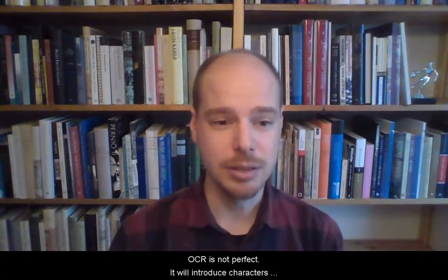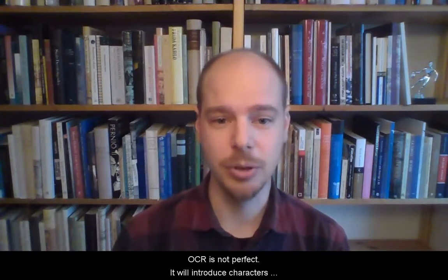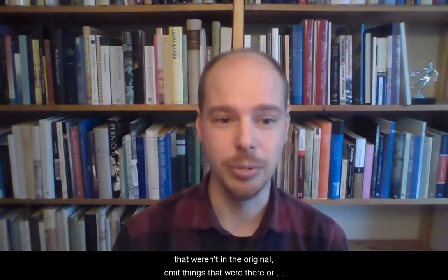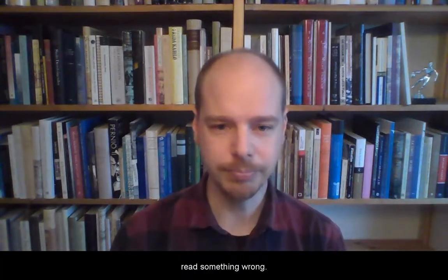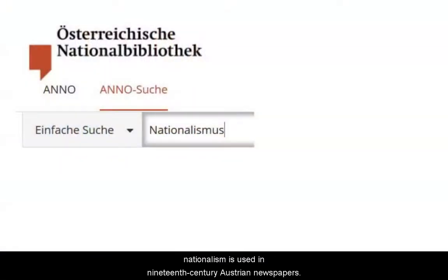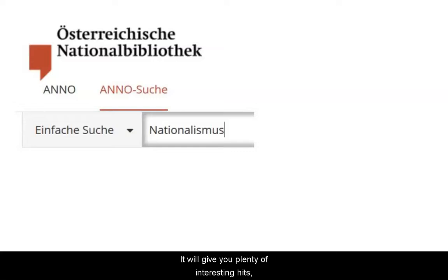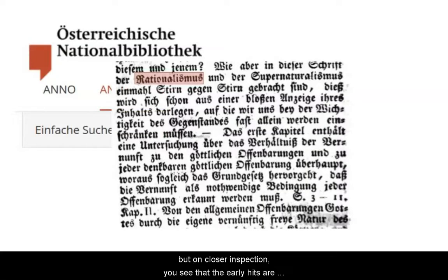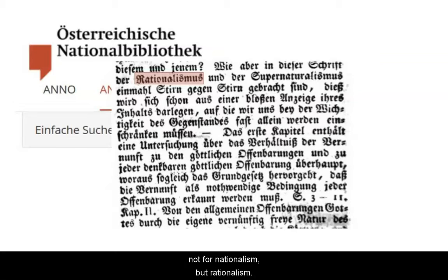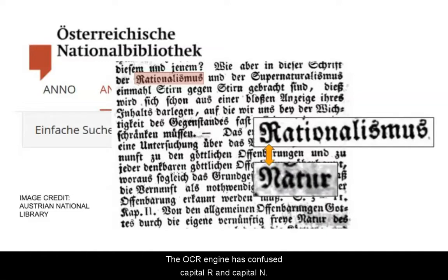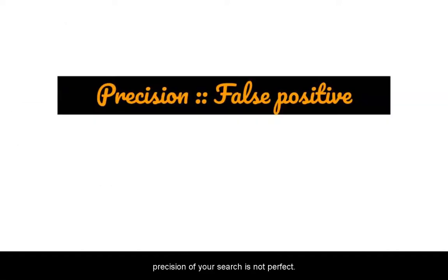For instance, OCR is not perfect. It will introduce characters that weren't in the original, omit things that were there, or read something wrong. Say that you wanted to find instances in which the word 'nationalism' is used in 19th century Austrian newspapers. You enter the word and do a search. It will give you plenty of interesting hits, but on closer inspection, you see the early hits are not for 'nationalism' but 'rationalism.' The OCR engine has confused capital N and capital R. This is called a false positive, and it means that the precision of your search is not perfect.